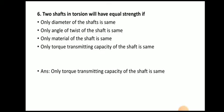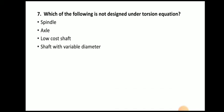Next question: two shafts in torsion will have equal strength if — the answer is the torque transmitting capacity of both shafts is the same. When the torque transmitting capacity of two shafts is the same, the two shafts in torsion will have the same strength.